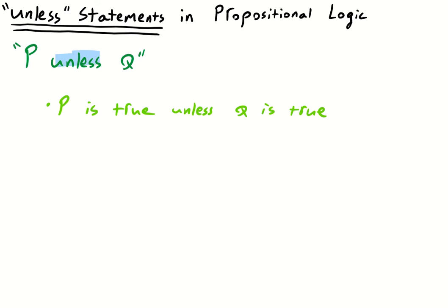So we have that unless. P is true unless Q is true. Or in other words, what if Q is false? If Q is false, what does that mean? Well, P must be true then.